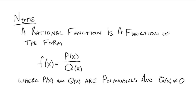We're going to do an introduction on rational functions. A rational function is a function of the form f of x equals p of x divided by q of x. This p of x and q of x are just polynomials, and obviously the denominator q of x can't be equal to 0. So a rational function is just a polynomial divided by another polynomial.